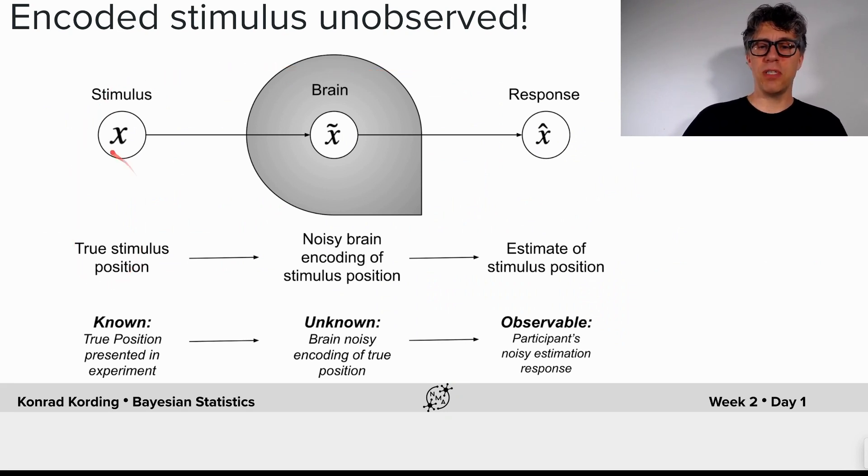So we do have the true stimulus position, and we do have the subject estimate of the stimulus position. And this part we assume is optimal. But what we don't know is the noisy brain's encoding of stimulus position.